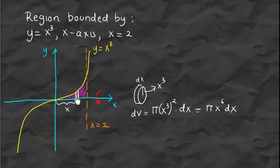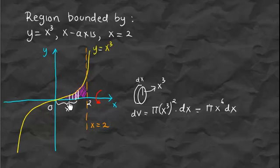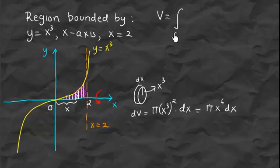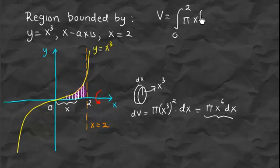Now imagine we have these kinds of slices starting from x equals 0 up to x equals 2. We want to add up the volumes of all the objects obtained by rotating each slice. Therefore, the total volume is the integral from 0 to 2 of pi times x to the sixth dx.